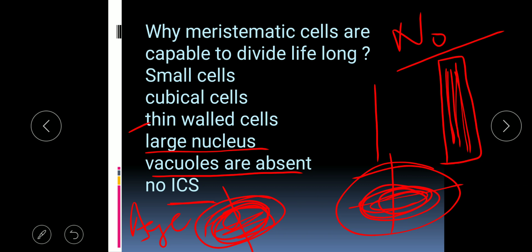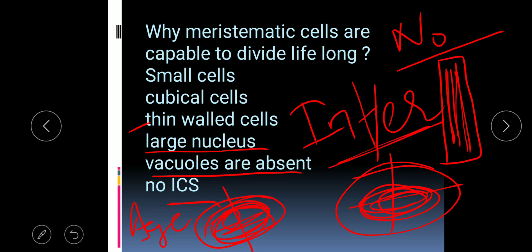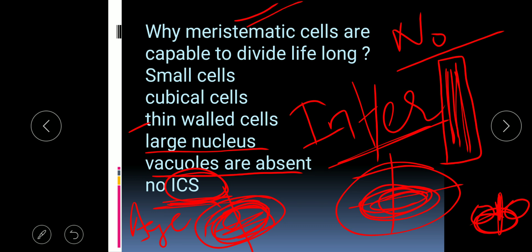There is no intercellular space — ICS stands for intercellular space, meaning there is no space between two cells. For example, if two class sections are merged together, the number of students becomes very high, so we divide them into two different sections. Similarly, no intercellular space forces the meristematic cells to divide lifelong.